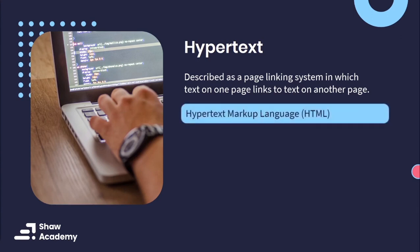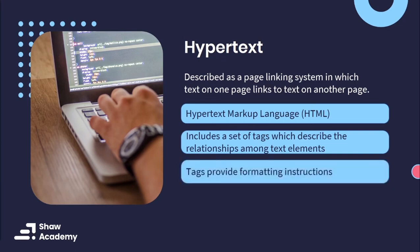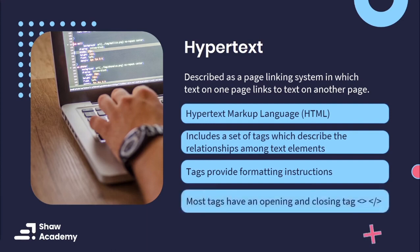HTML documents are essentially the skeleton of a web page or website — they make up the skeleton where your styling makes up the meat, along with JavaScript. HTML documents include a set of tags which describe the relationship among elements. An element could be something like a paragraph tag, a div container, a button, or an input form — these are all elements of the web. Tags provide formatting instructions to the client so that they are rendered correctly in our browser. Most tags have an opening and a closing tag, though not all tags do — when we get into web development, I'll show you a couple of examples.